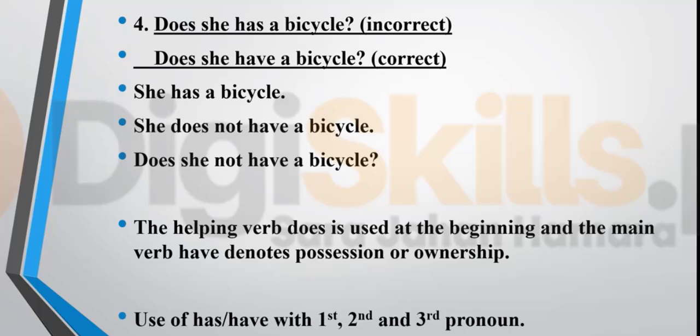When 'does' appears — whether in a question or negative — you always follow it with the first form of the verb. 'She has a bicycle' is a simple statement, but 'does she have a bicycle?' uses the first form 'have.' 'She does not have a bicycle' is the correct negative form. The helping verb 'does' is used and the main verb shows possession or ownership. Use 'has' and 'have' with the correct person accordingly.